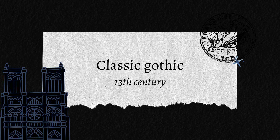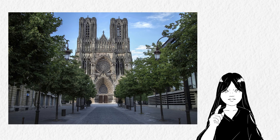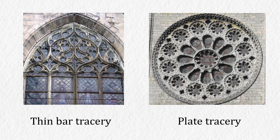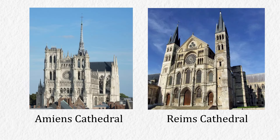Classic Gothic, sometimes called High Gothic, started around the 13th century. They had taller structures and better buttresses to support the height. The distinguishing characteristic of this era is the use of thin bar tracery instead of plate tracery. Some examples from this period are Amiens Cathedral and Reims Cathedral.